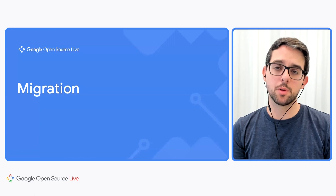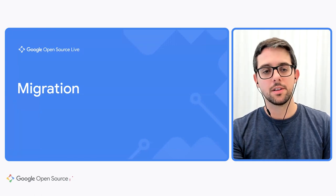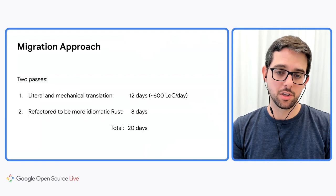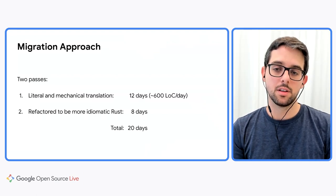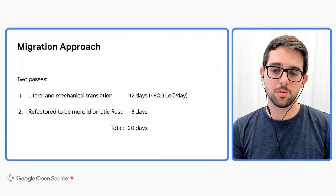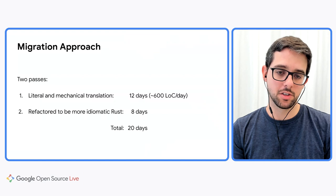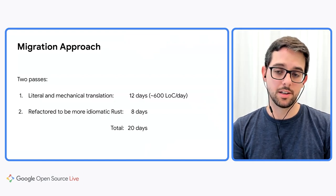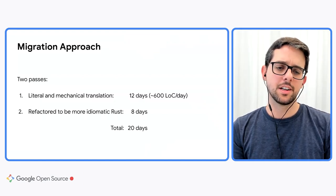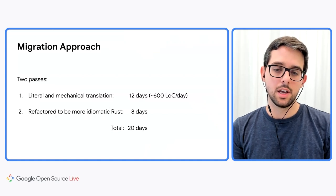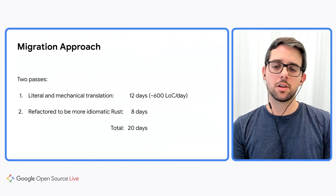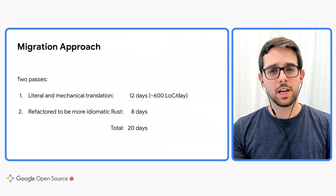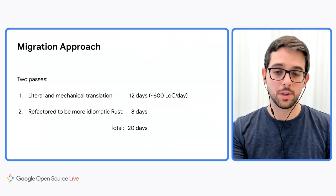Now let me show you how I approached the migration itself. I ported the WOFF2 library from C++ to Rust in two passes. The first pass was as literal and mechanical a translation as reasonably possible, with very few exceptions that I'll mention in the next slide. That took me 12 days of work. In the second pass, I refactored the code to be more idiomatic Rust, which took me about eight days of work, for a grand total of 20 days.